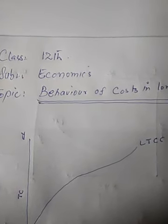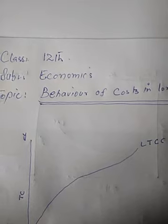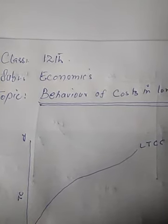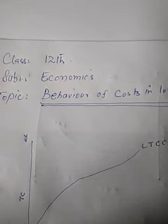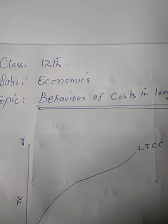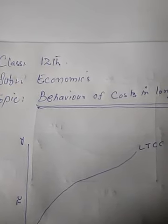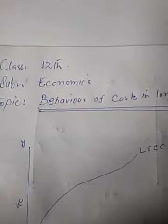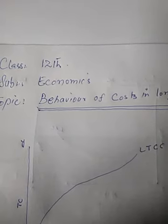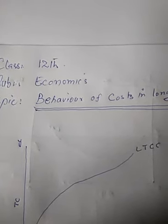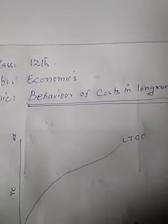Assalamualaikum dear students. So far we have discussed various forms of costs like the total cost, variable cost, marginal cost, money cost, real cost, and opportunity cost. We discussed these costs with reference to the short run. Now let us today see how these costs behave in the long run.